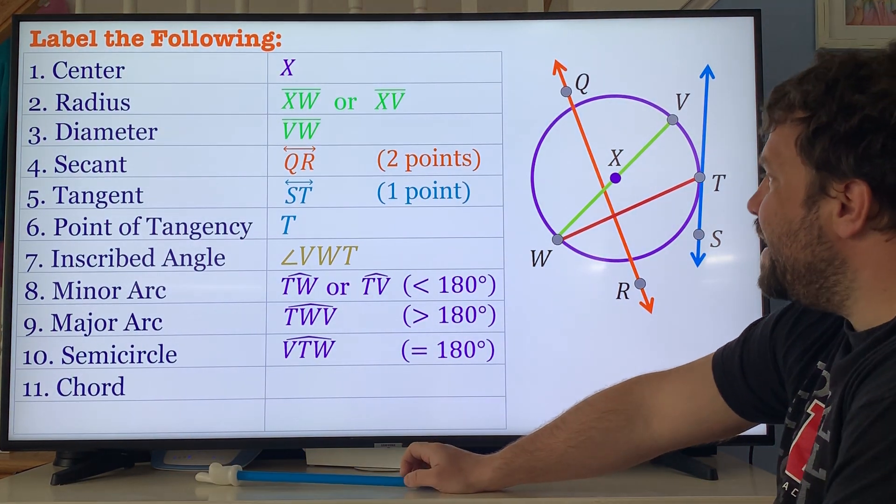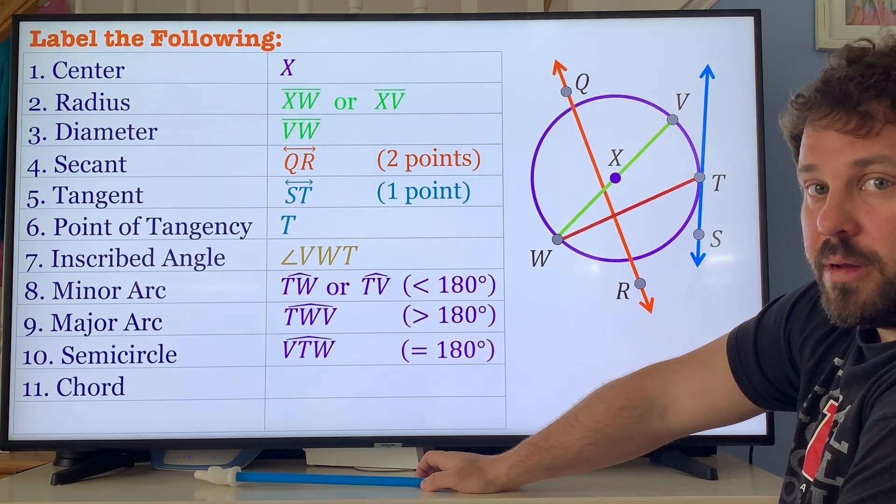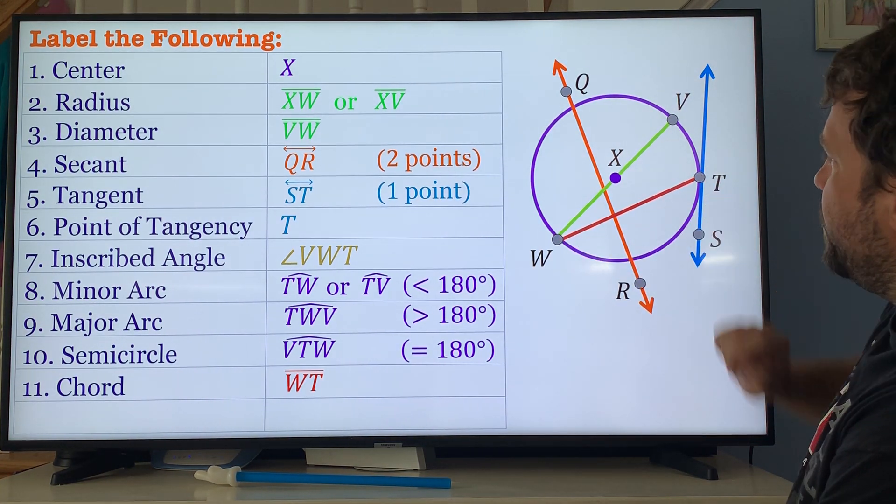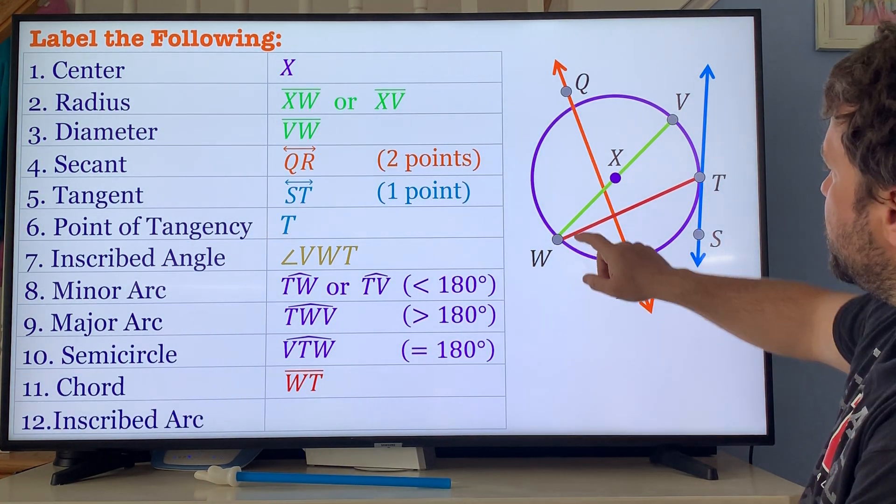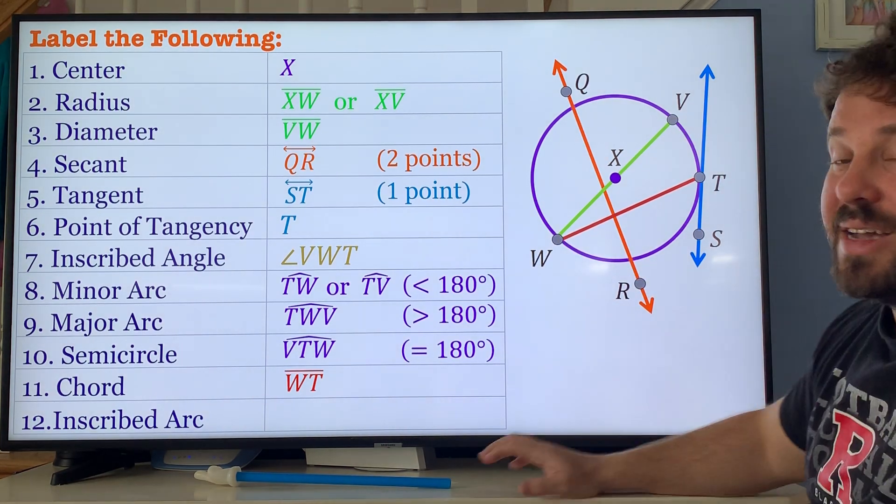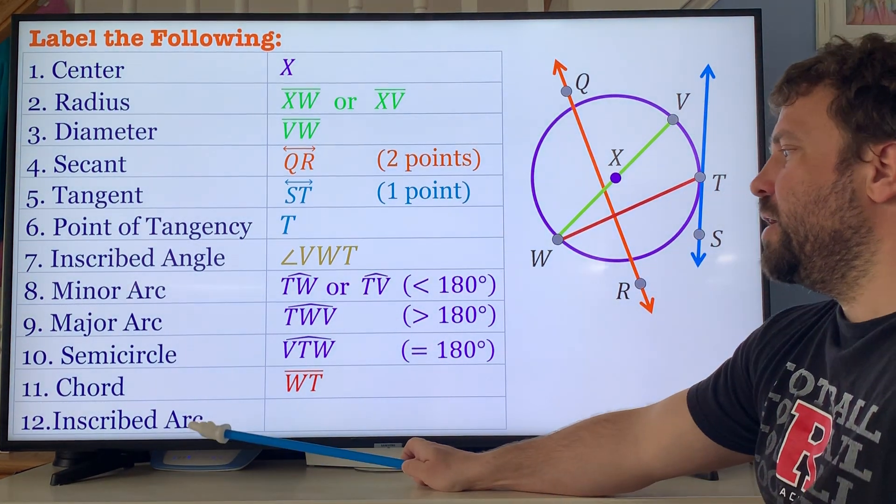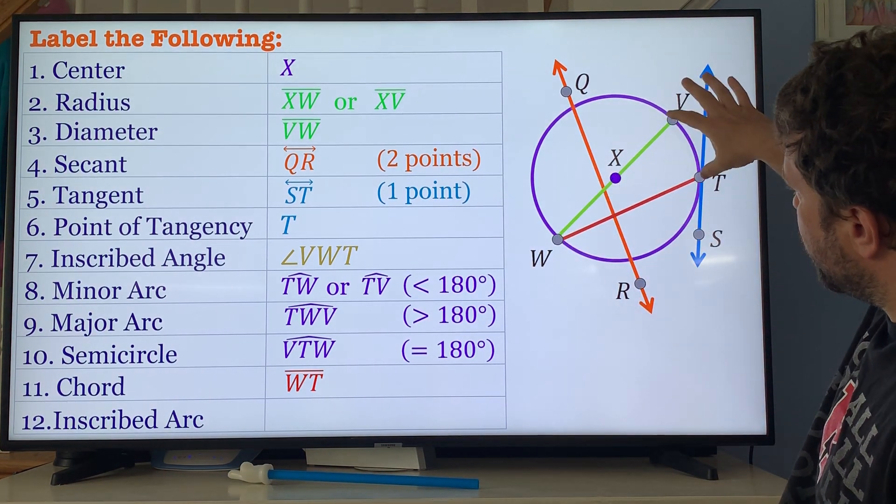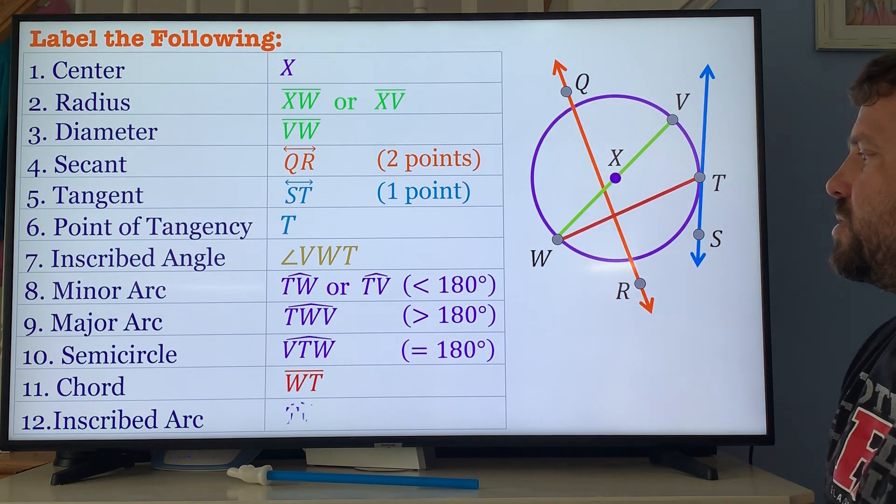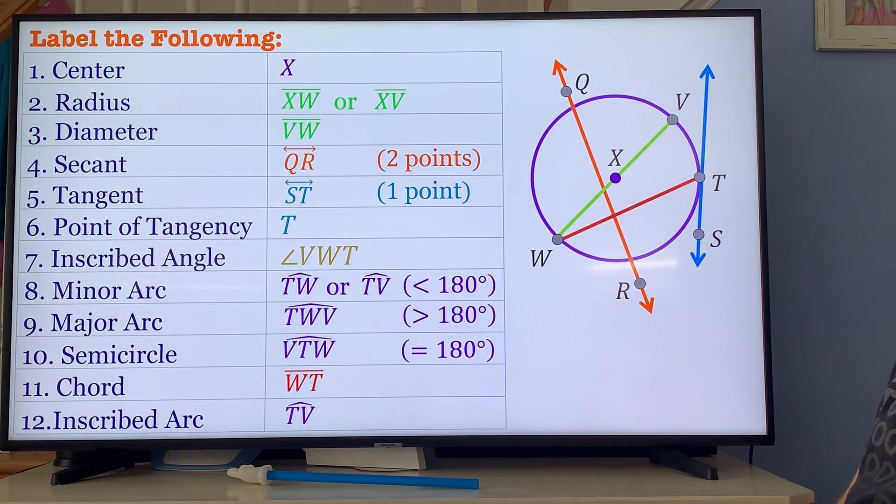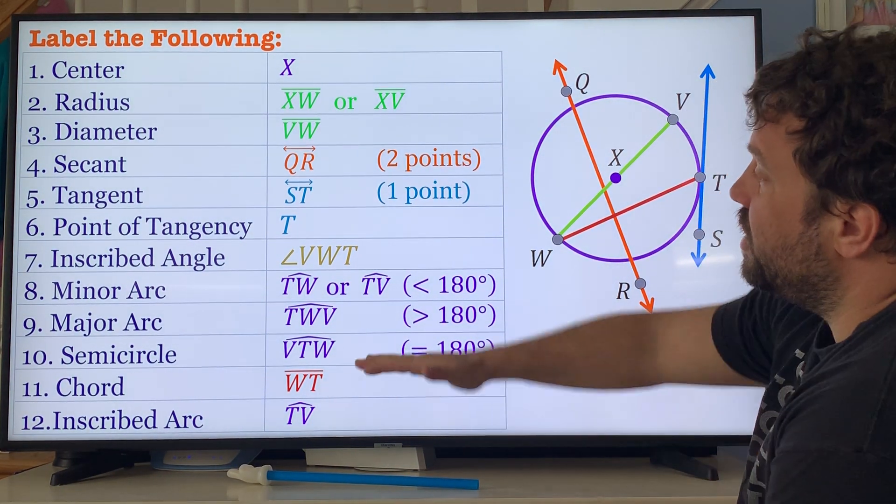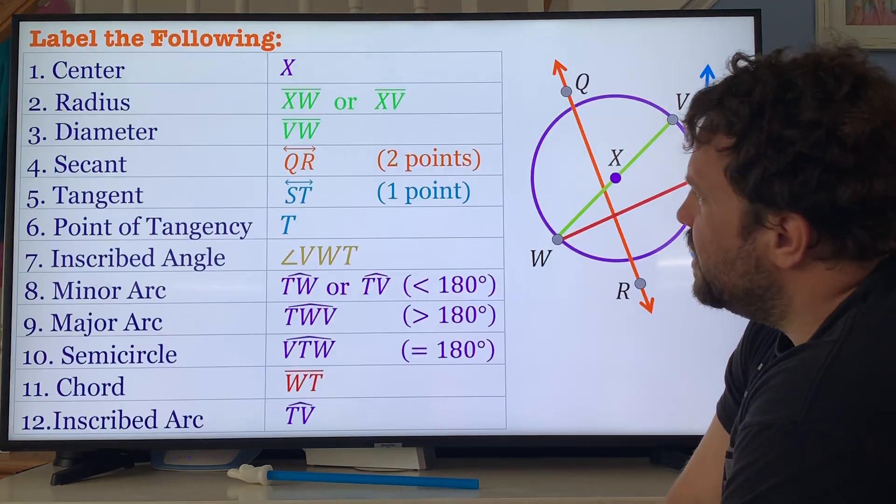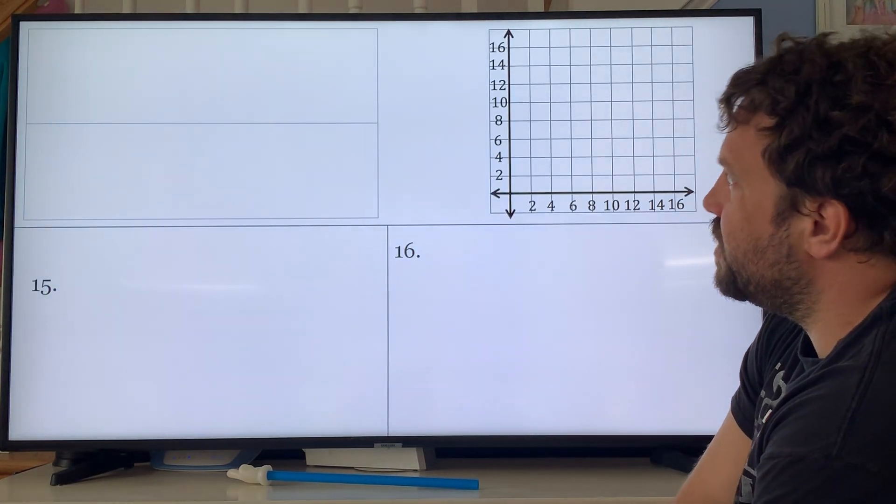Next one is a chord. A chord is a segment that has both its endpoints on the circle, so WT. Is there another one? There actually is, you can also say WV. A diameter is a chord. Inscribed arc: that is the arc that is inside the inscribed angle, so that is arc TV or arc VT. And those are your definitions, not very difficult.